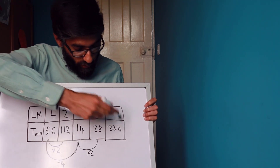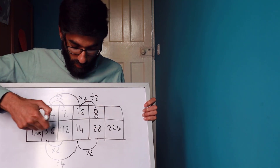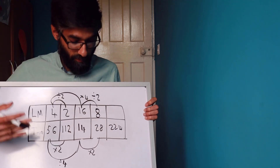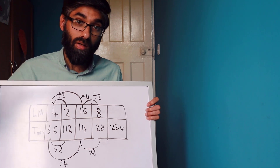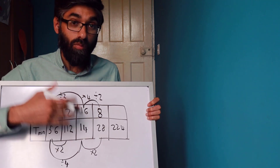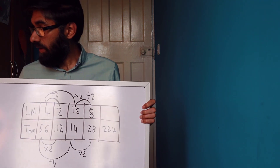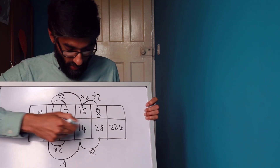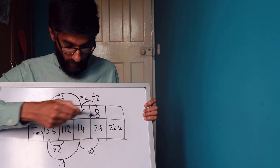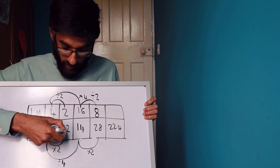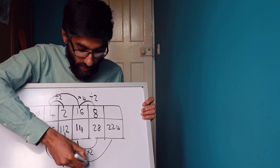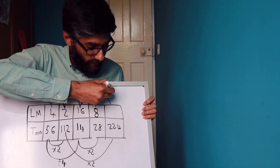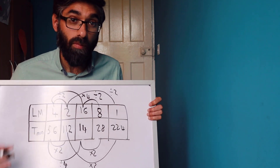For 224 minutes, we need to find how many lawnmowers are needed. More time means fewer lawnmowers. Notice that 112 doubled gives 224, so multiply by two means we divide the lawnmowers by two: 2 divided by 2 is 1. So one lawnmower will take 224 minutes.